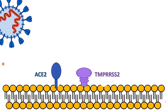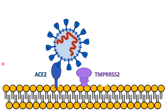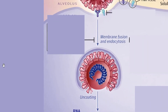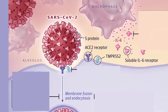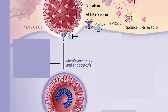The virus attaches with the help of two receptors: one is the ACE2 receptor, which attaches to the spike protein of the virus, and the second is the TMPRSS2 receptor, which actually helps in endocytosis of the virus into the cell. In this schematic diagram, we can see SARS-CoV-2 with its S protein getting attached to the ACE2 receptor, and with the help of TMPRSS2 receptors, getting endocytosed inside the cell.